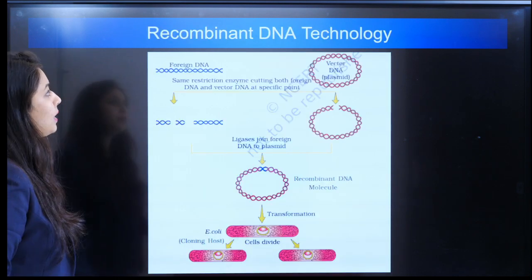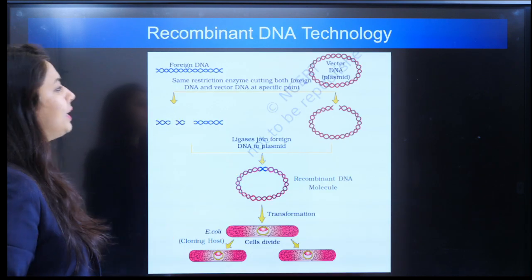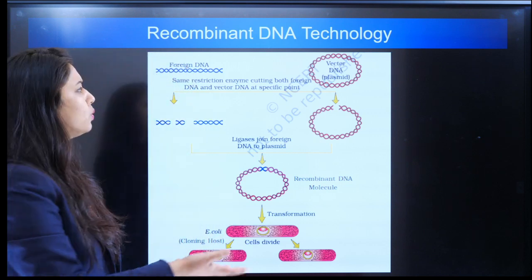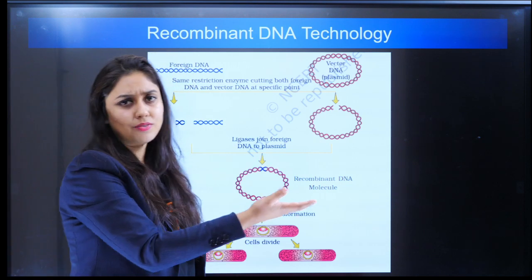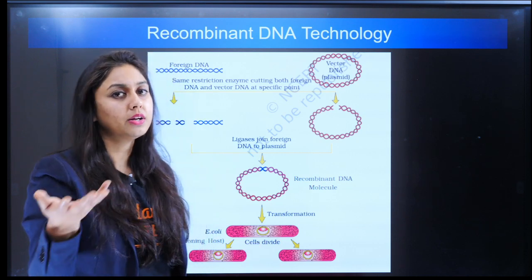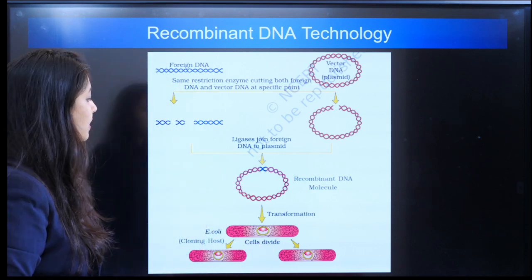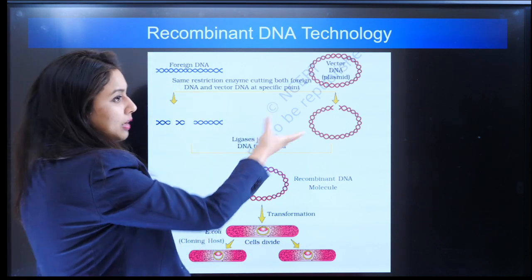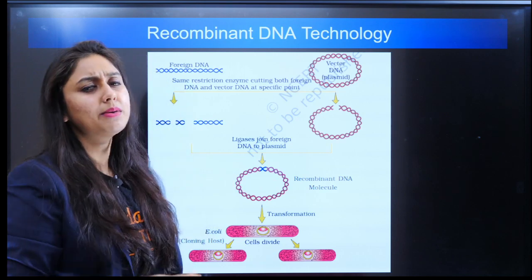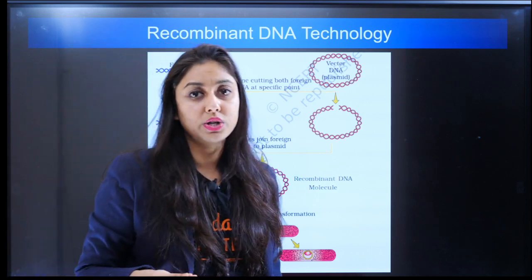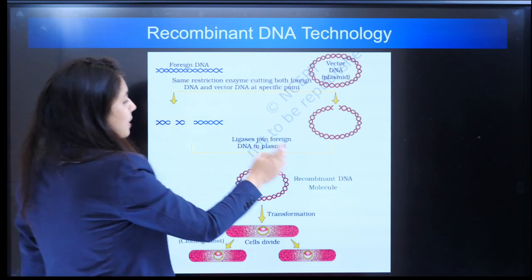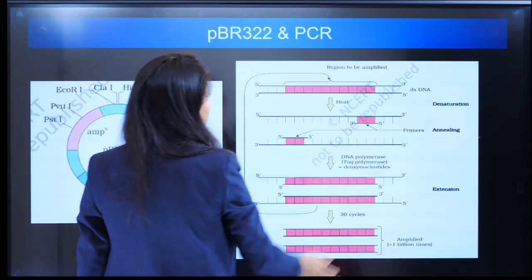Biogas plant — easy one. Recombinant DNA technology — it is also a very easy one, everything has been explained to you very well. You can draw it, which is very good. As such a standalone diagram, no one will ask, but you can expect a lot of questions from this topic.